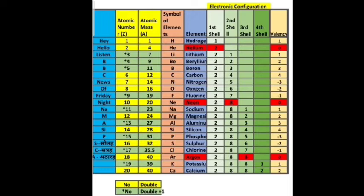Atomic number 1, hydrogen, is an exception — its atomic number and atomic mass are the same: 1. For the green cells marked with a star, you double the atomic number and add 1. So for atomic number 3: double is 6, plus 1 equals 7. For atomic number 4: double is 8, plus 1 equals 9.